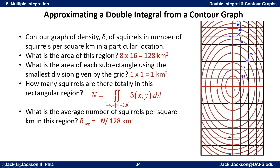How many squirrels are there totally in this rectangular region? The number is going to be the integral of this density function — the z values, which I'll call delta for density, lowercase delta. So if you integrate delta of x, y over the region, that double integral gives you the number of squirrels. Then just divide that number by the total area and you get the average number of squirrels per square kilometer. So we need to estimate this double integral.